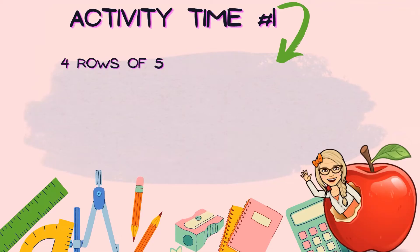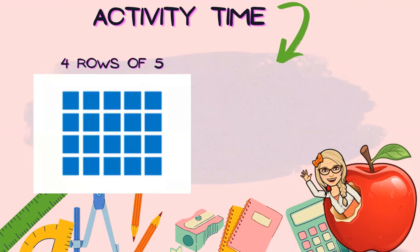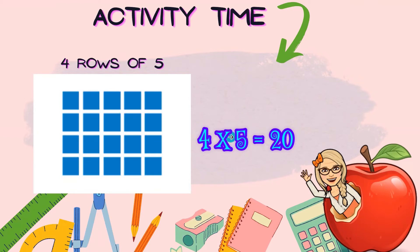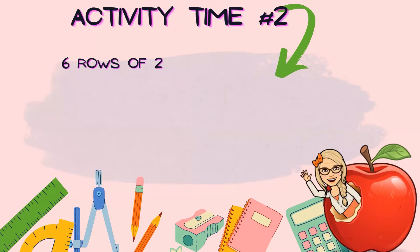Are you ready for activity number one? Let's make an array: four rows of five. Remember — four rows of five. Very good job! And what is the multiplication sentence for this array? Four times five equals 20. Very good job!